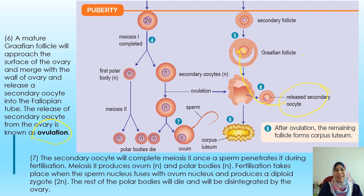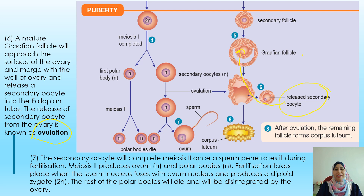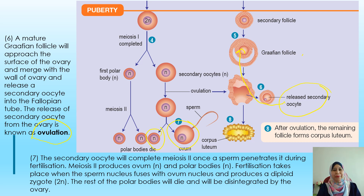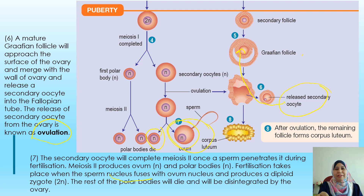The secondary oocyte will complete meiosis 2 once the sperm is able to penetrate it — this is called fertilization. Meiosis 2 will produce the ovum and one polar body, both haploid. Fertilization is when the sperm nucleus fuses with the ovum nucleus to produce a diploid zygote (2N), since sperm is haploid and ovum is haploid.